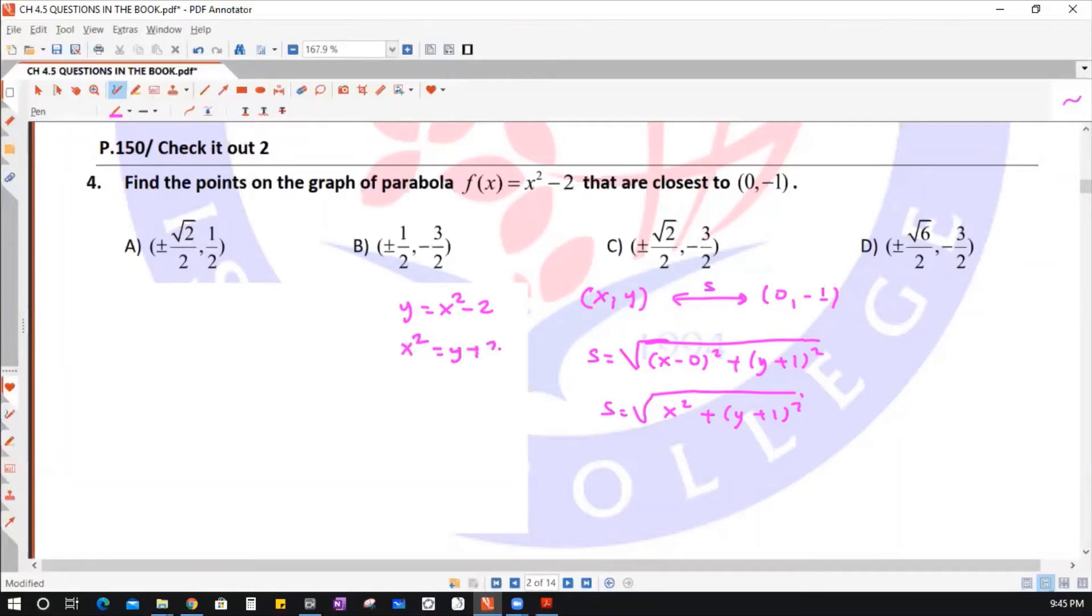We can leave the x² alone here. It is y + 2. So in the function, to make it one variable, instead of x², replace y + 2. So y + 2. At the same time, open the parentheses. It is (y + 1)² = y² + 2y + 1.